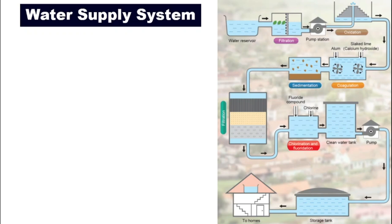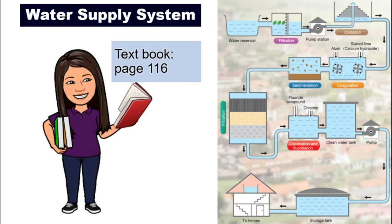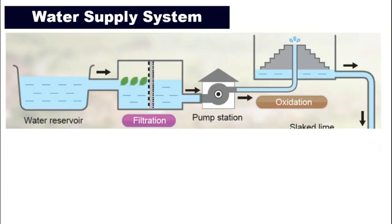We have a whole water supply system where the water from its origin — maybe it's a river, maybe it's a water reservoir — all the way to your home. I have a hard time trying to fit all of these tanks into one slide, so I will invite you to turn to page 116 of your textbook for a clearer picture. We will look at this whole system one section by one section. Let's begin.